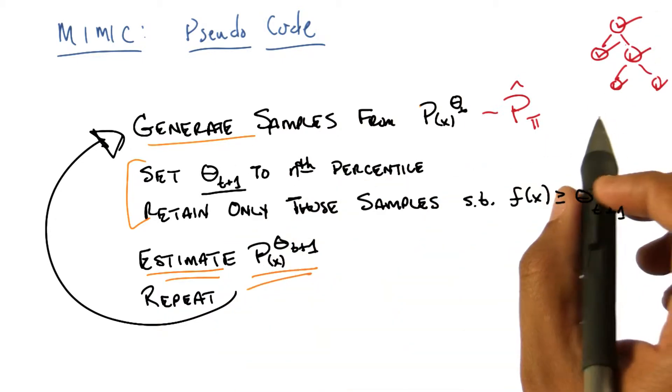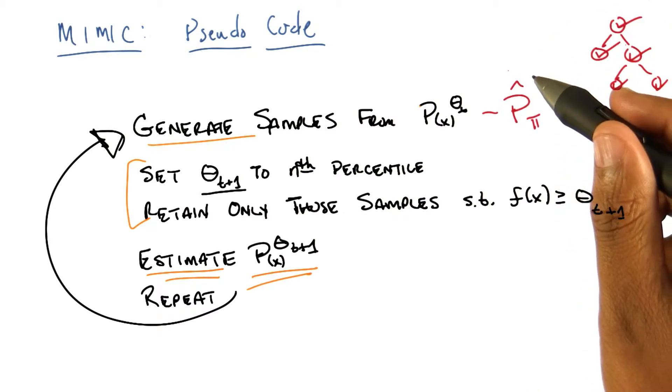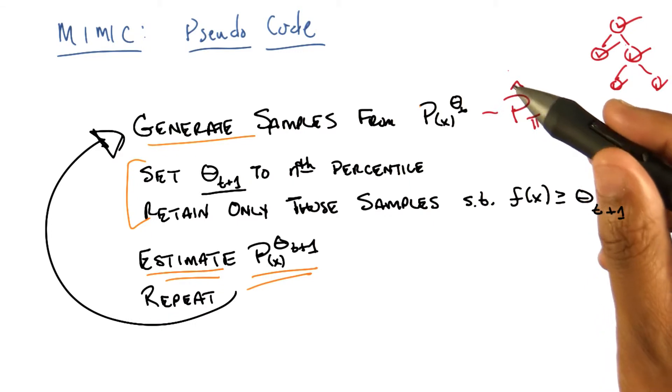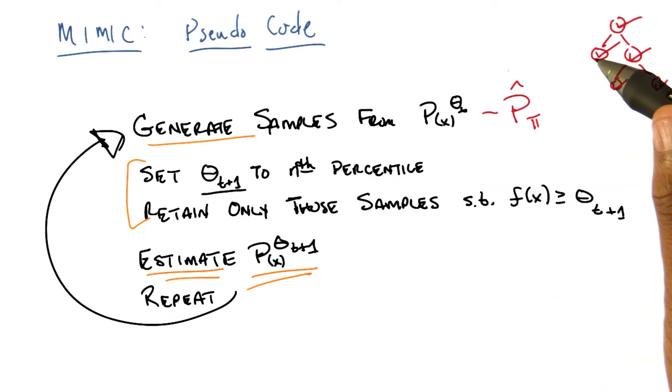So we generate all of these samples, and that tells us now, for every single feature x of i, how often that was taking on a value of 1, or taking on a value of 0, if we assume everything's binary. So that means we have unconditional probability distributions, or at least estimates of unconditional probability distributions, for every single one of our features.